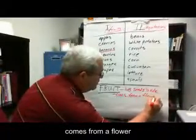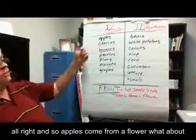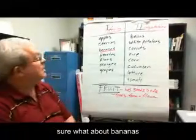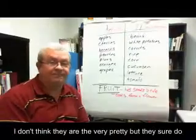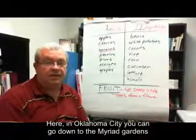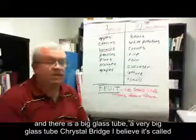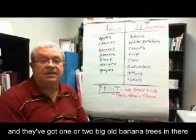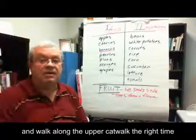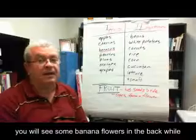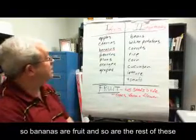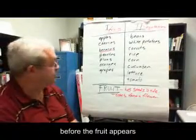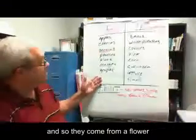It comes from a flower. So apples come from a flower. What about cherries — are there blossoms on the cherry tree before there's cherries? There sure are. What about bananas — do bananas make flowers? I don't think they're very pretty, but they sure do. Here in Oklahoma City, you can go down to the Myriad Gardens, and there's a big glass tube there — Crystal Bridge — and they've got one or two big banana trees in there. If you walk along the upper catwalk at the right time, you'll see some banana flowers, and if you come back a while later, you'll see bananas. So bananas have flowers, and so do the rest of these. They come from a flower, and they have seeds inside.